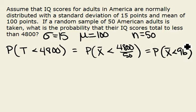Now from here we need to change this to a Z so that we can use our normal table to find our probability. We can change X bar into a Z by subtracting its mean, which is mu, and dividing by its standard deviation, which for a sample is sigma over the square root of n.